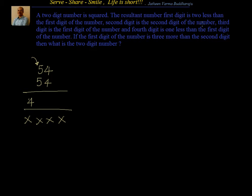The second digit is the second digit of the number — that is four, so that will be four. The third digit is the first digit of the number, that means five. This is just an example we are taking; this may not be exactly correct. And the fourth digit is one less than the first digit of the number, so five minus one is four. We have also been told that if the first digit of the number is three more than the second digit, then what is the two-digit number?